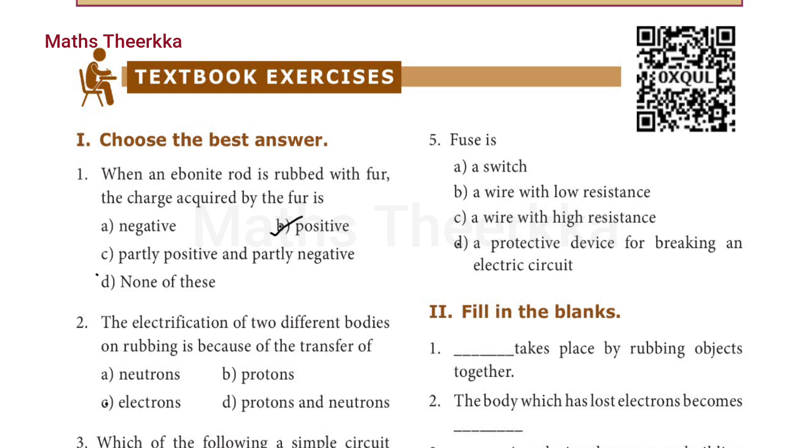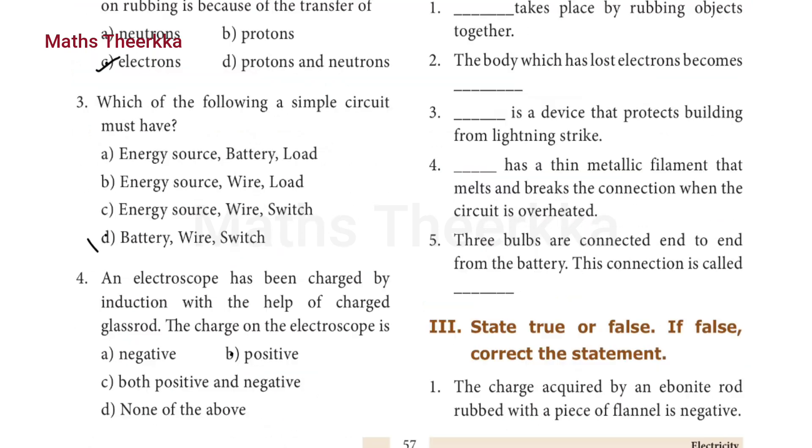Second one: the electrification of two different bodies on rubbing is because of the transfer of c) electrons. Third one: which of the following a simple circuit must have, option d) battery, wire, switch.